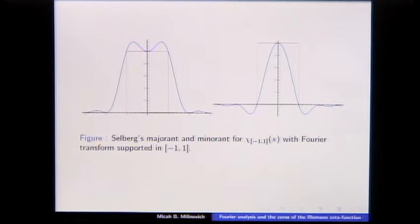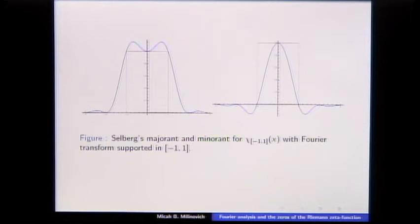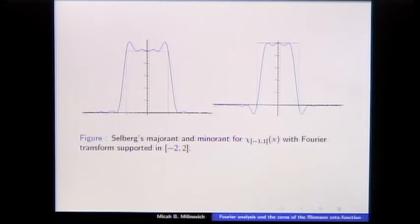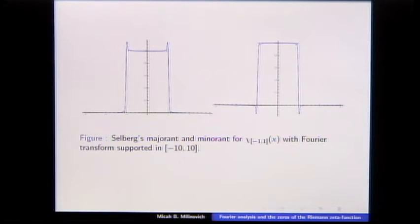Here's what the Beurling–Selberg functions look like. With Fourier transform supported in [-1,1], you can see the majorant approximating the characteristic function of [-1,1]. As I increase the support of the Fourier transform — to [-2,2], [-5,5], [-10,10] — they get nicer and nicer, and at [-10,10] it almost looks exactly right. If you're curious about these, look in Montgomery's article 'Analytic Methods and the Large Sieve' or 'Extremal Functions in Fourier Analysis,' or Volume 2 of Selberg's Collected Works, or Tenenbaum's book on probabilistic and analytic number theory.